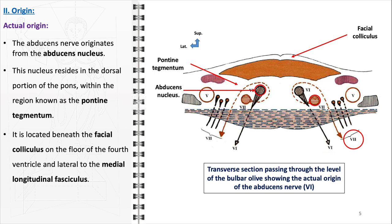This close proximity to the facial nerve is of considerable clinical relevance, as any lesion affecting this area could potentially impact both the abducens and facial nerves. Additionally, the abducens nucleus lies lateral to the medial longitudinal fasciculus, an important neural tract that coordinates eye movements and head turns. This relationship is critical for the coordination of conjugate horizontal gaze. When the abducens nerve activates the lateral rectus muscle for eye abduction, the medial longitudinal fasciculus helps coordinate the contralateral oculomotor nerve to move the other eye medially, ensuring synchronized movement of both eyes.